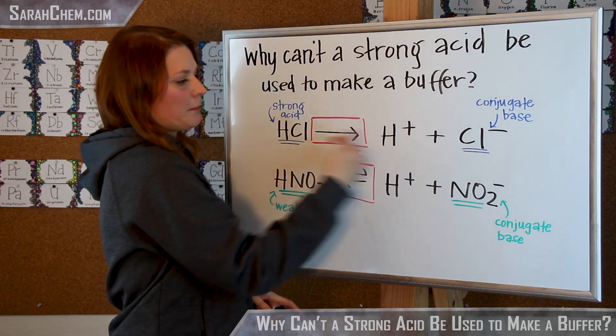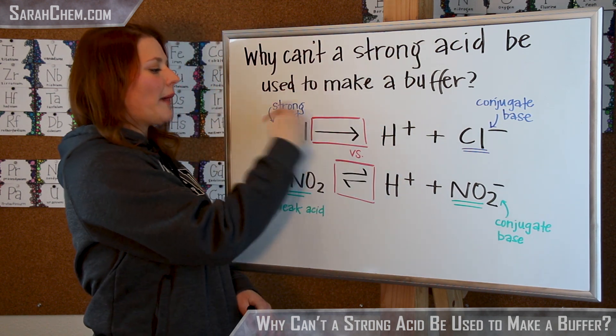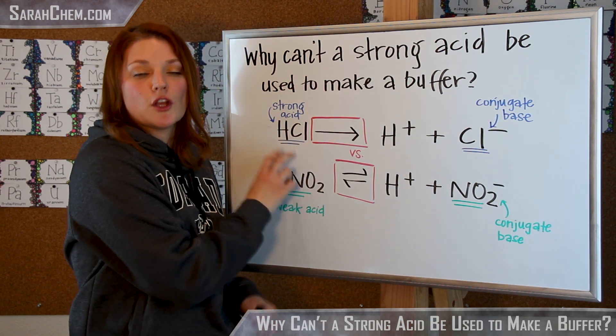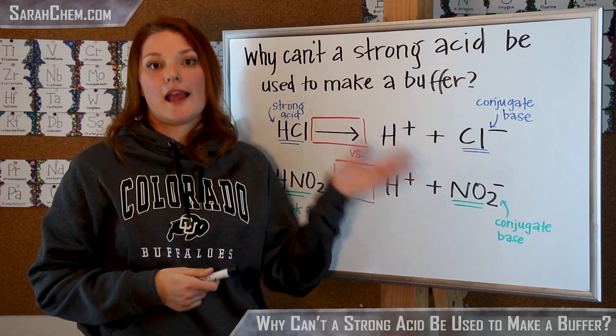Because remember, if we look at this backwards reaction, chloride reacting with an acid doesn't go backwards to form HCl. So we can't actually ping pong this reaction back and forth if I were to add an acid to solution.